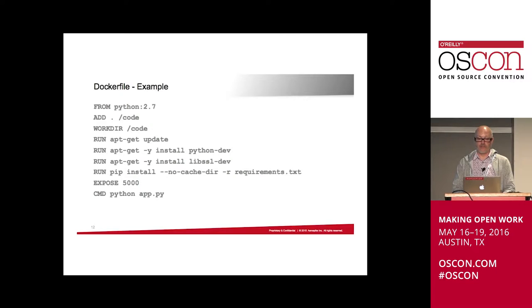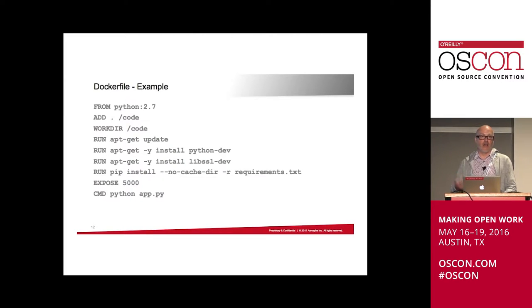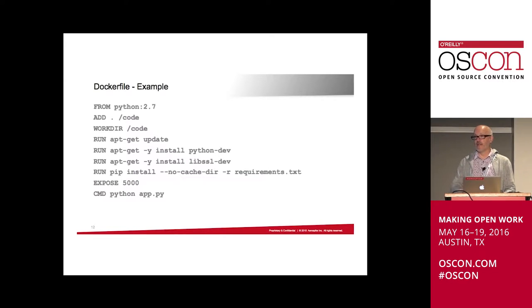What does a Dockerfile look like? A Dockerfile describes everything the process needs and is supposed to be human-readable. You specify a particular Python version, add code from your local directory, install system packages, and install Python packages as well. It's a very easy thing to read in order to understand the image you're building and then executing.